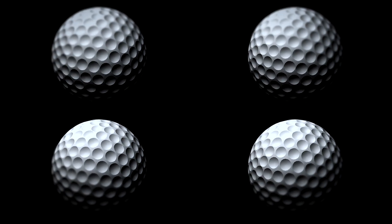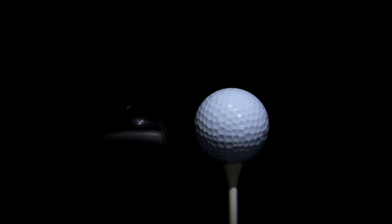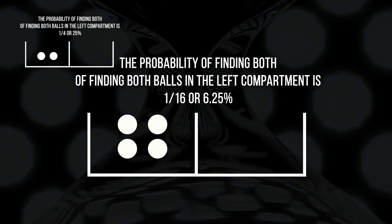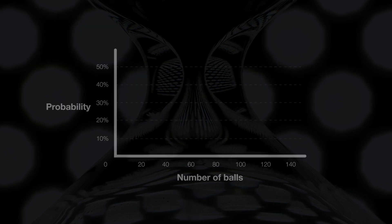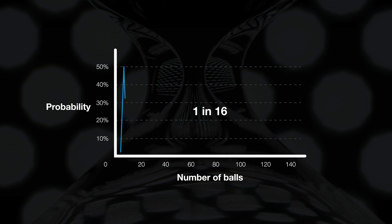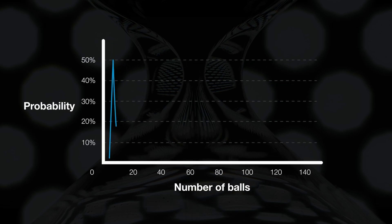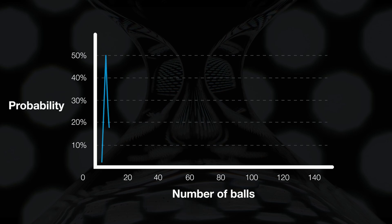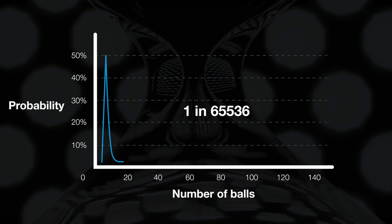Now, let's calculate the probability of finding both balls in the left compartment when there are four identical balls. The number of possible arrangements increases because there are more balls to move around — represented by 2 to the power of 4, resulting in 16 possible arrangements. So the probability of having all four balls spontaneously placed in the left compartment is now one out of 16. As the number of identical balls increases, the likelihood of them all being in the left compartment decreases. As we increase the number of balls to 5, the probability decreases to 1 in 32. With 16 balls, the probability decreases to 1 in 65,536. Notice how fast the numbers jump.